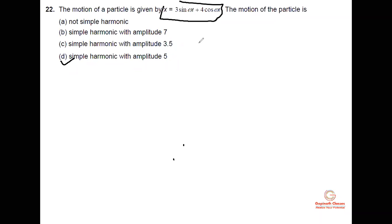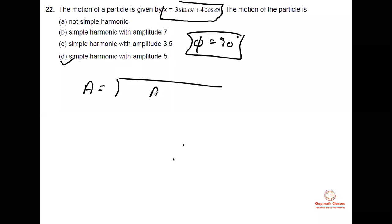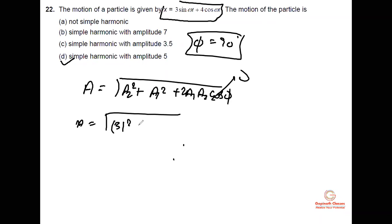The angle between them is π/2, equal to 90 degrees. The resultant amplitude is √(2·a1·a2·cos90°), so the cos term becomes zero. The result is √(3² + 4²) which equals 5. So the net resultant is 5, and the combination of SHMs gives resultant amplitude 5.